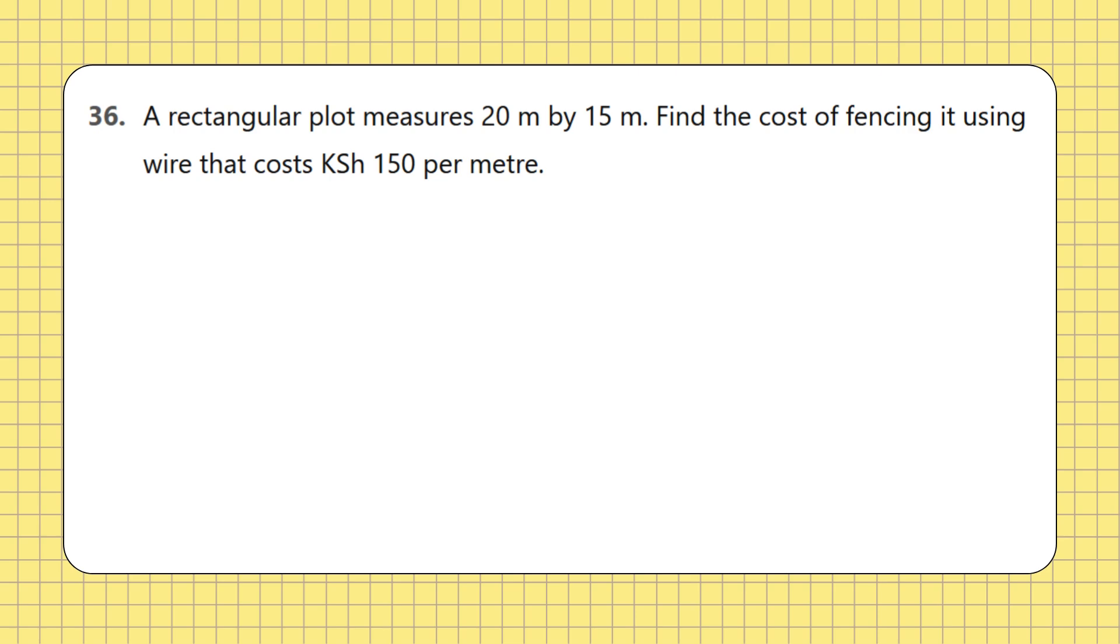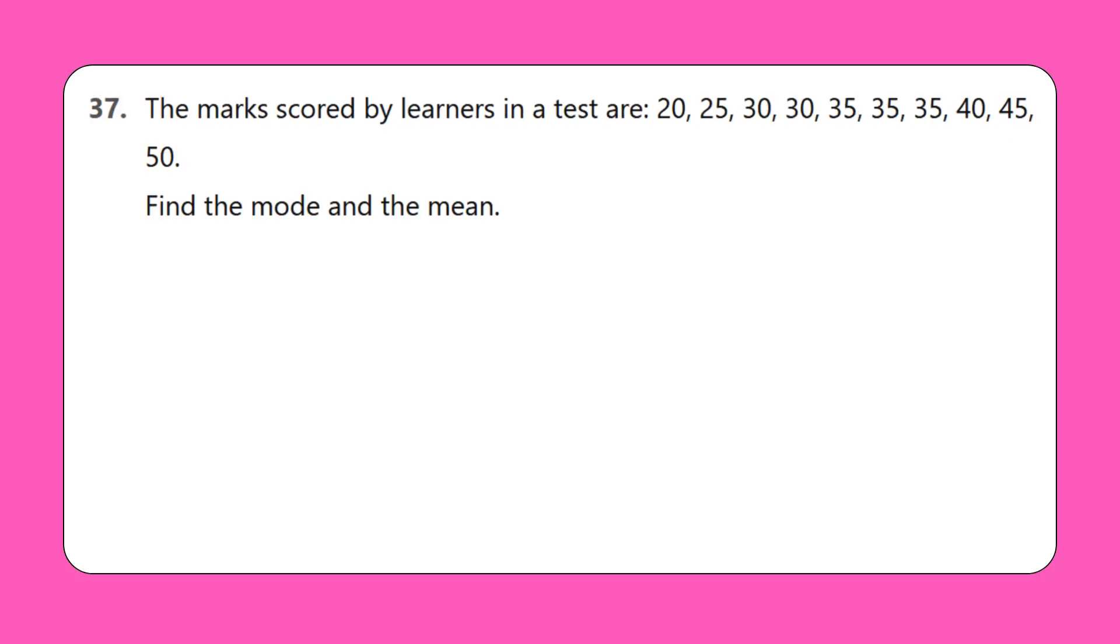36. A rectangular plot measures 20 m by 15 m. Find the cost of fencing it using wire that costs 150 Kenyan shillings per meter. 37. The marks scored by learners in a test are 20, 25, 30, 35, 40, 45, 50. Find the mode and the mean.